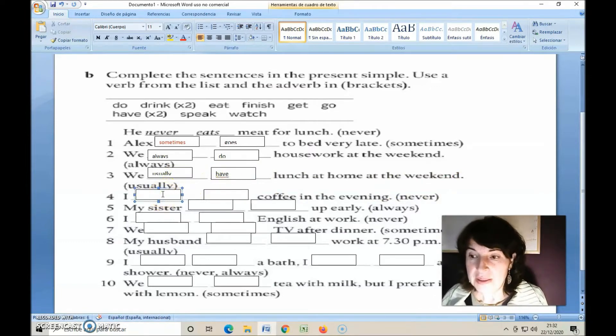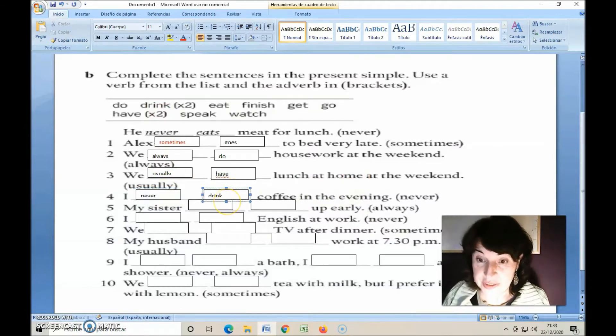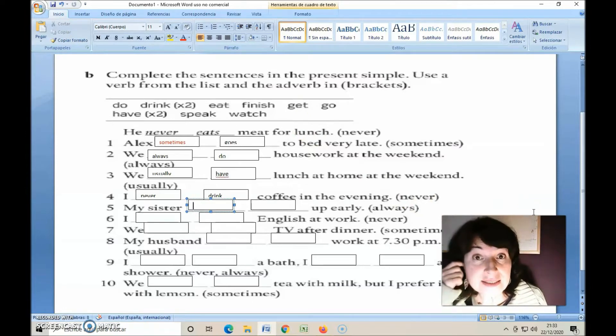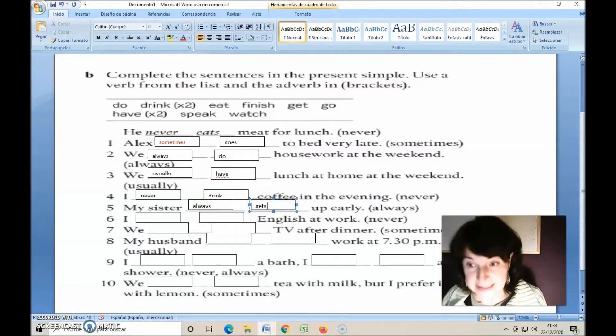Let's go here. We have to use never and coffee in the evening. So it's drink. First, the frequency adverb never and drink. And remember that we don't say I don't never drink but I never drink. My sister always gets up early. It's my sister, it's like she. So it's the third person, we add an S, gets up early.